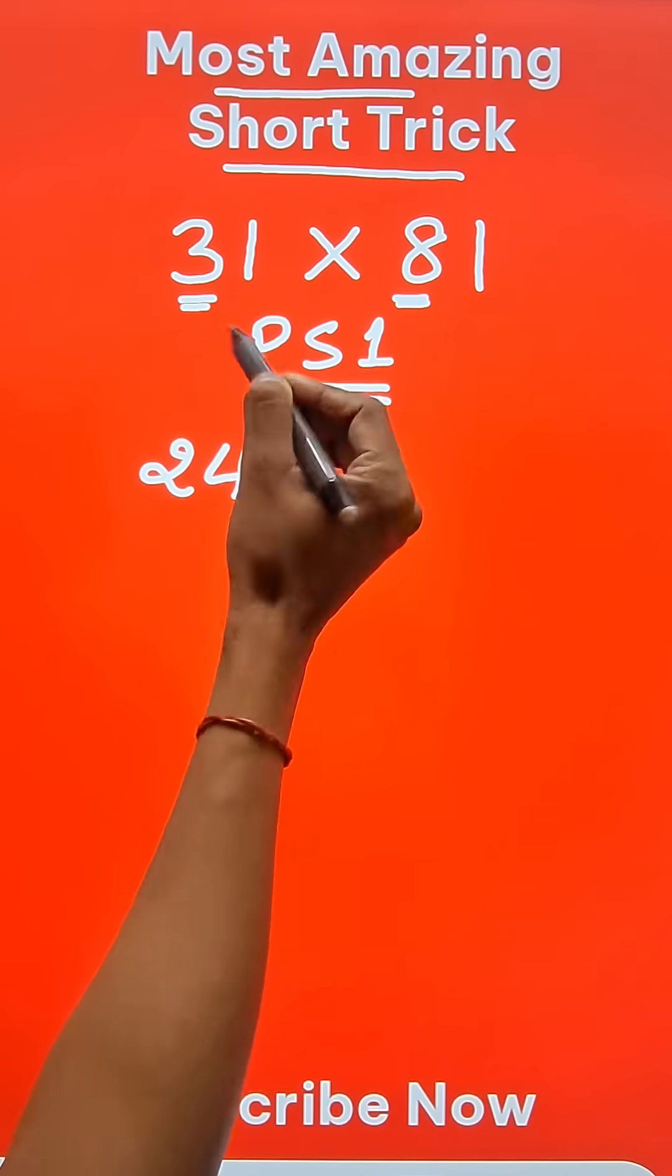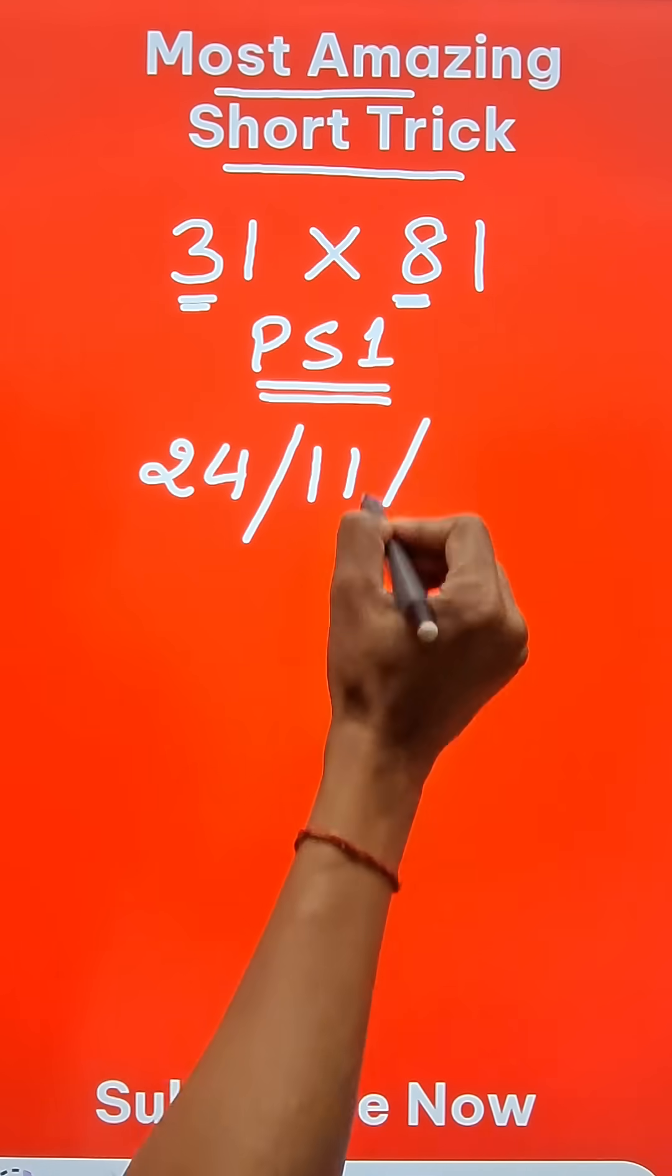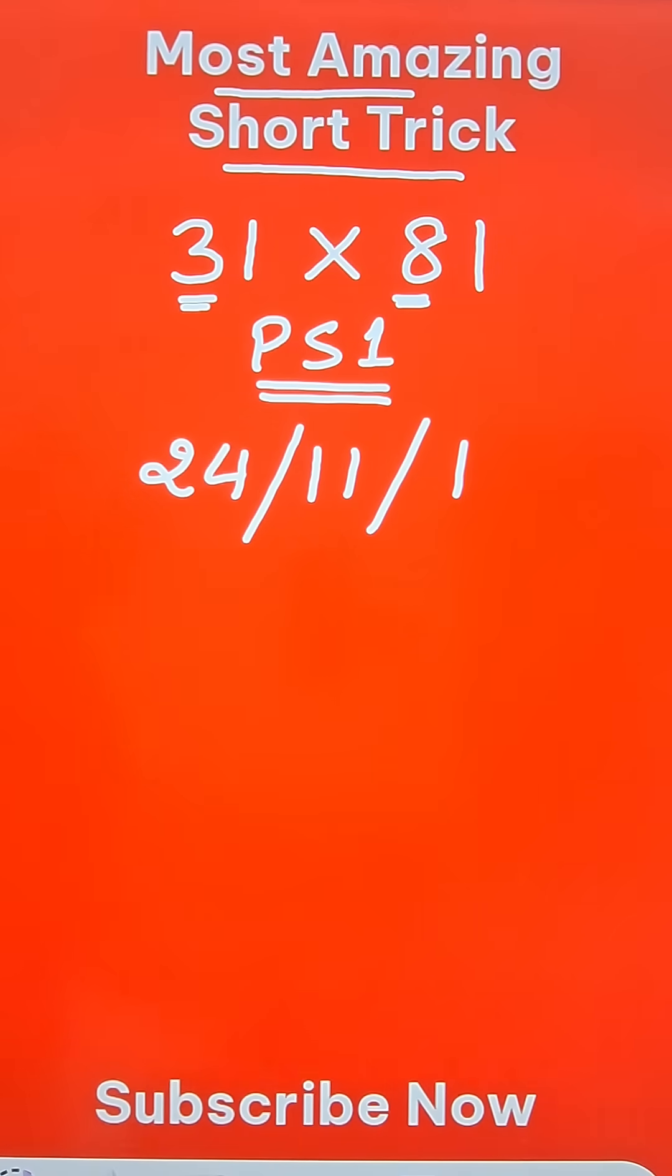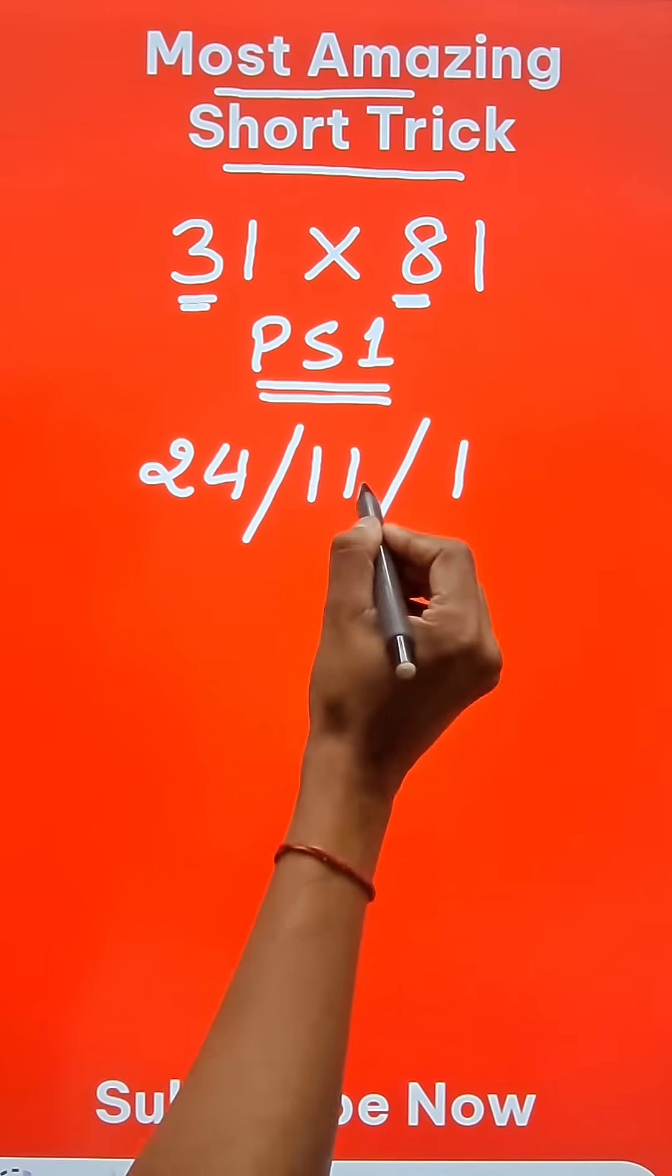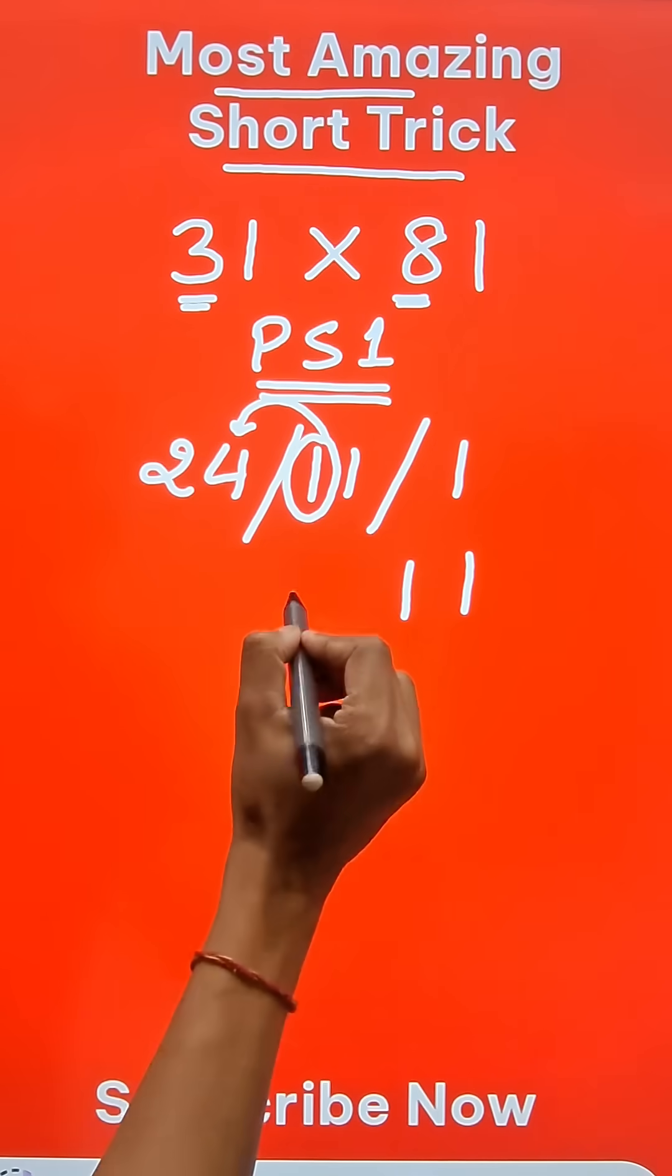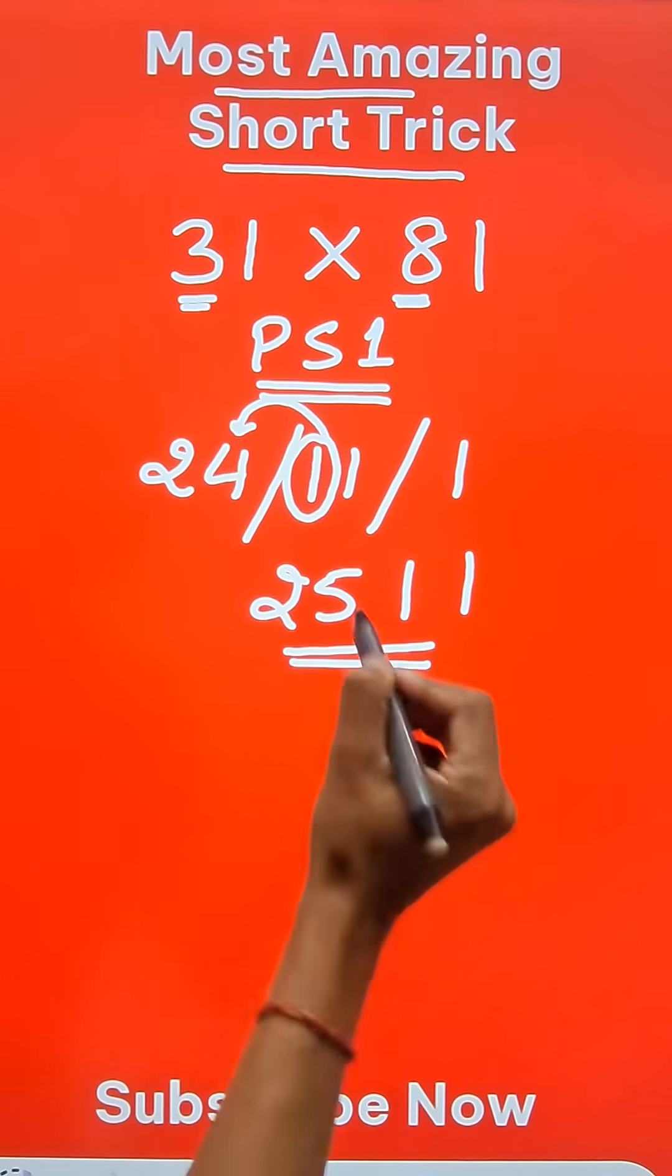S stands for the sum. 3 plus 8 is 11, and 1 means the number 1. Start writing from the unit digit 1. 11 means 1 and carry forward the tens digit. 24 plus 1 becomes 25, and here is your answer for this product.